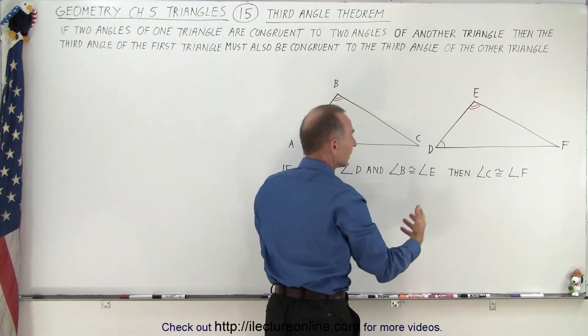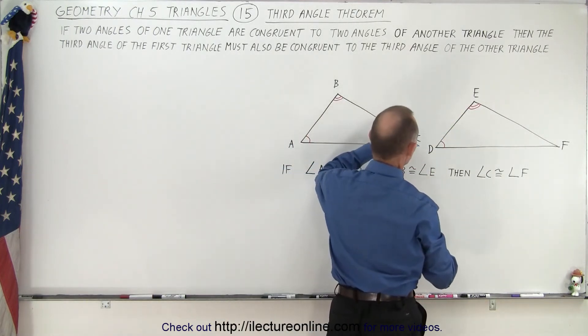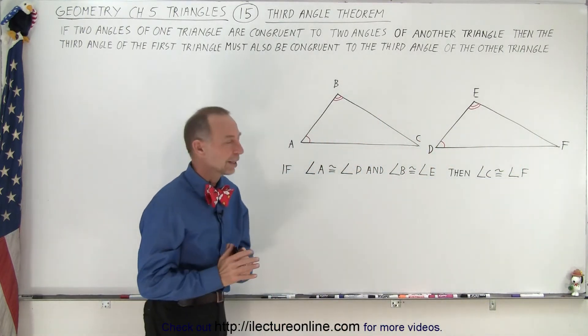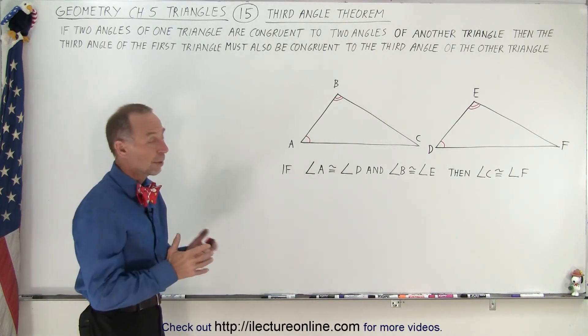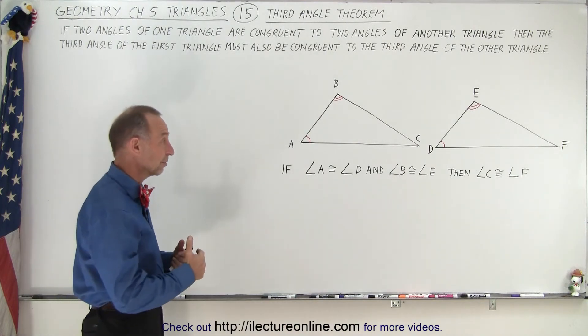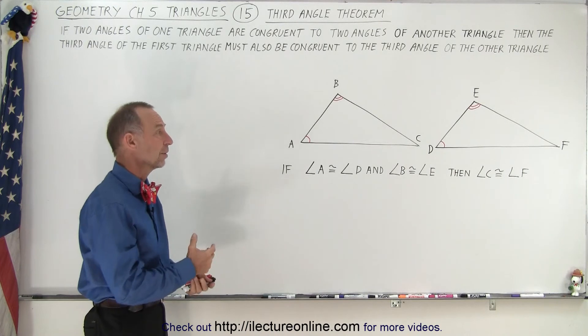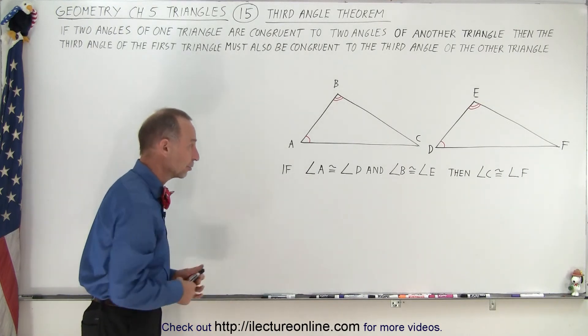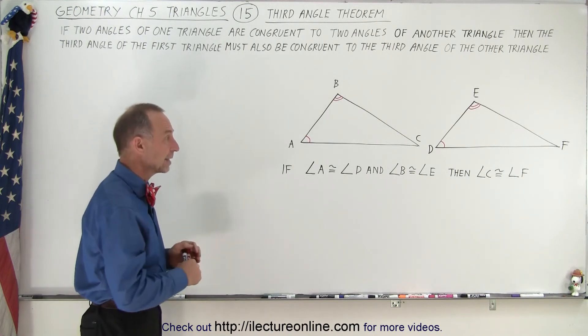then we know that the measure of angle C must be congruent to the measure of angle F. So it's clear that has to be the case. This is a very handy theorem because that way we can always find an angle if the other two angles are known. A very handy theorem, and